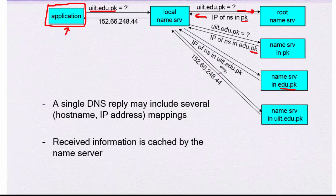Now it moves towards uiat, and this uiat is present in the last name server. Here it finds its address, uiat.edu.pk, and then it replies back its IP address, 152.66.248.44.